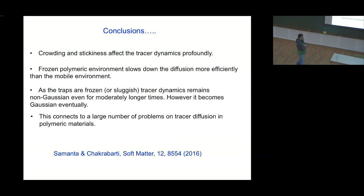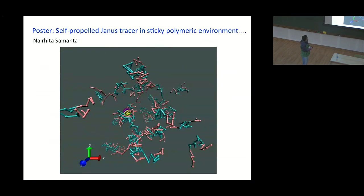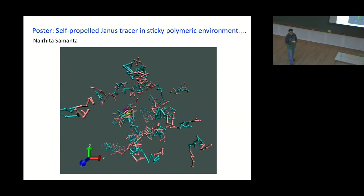This connects to a very large number of problems on tracer diffusion in polymeric materials. If you want to know more you can read our paper. This work was done with my student Navdeep. I thank SERB, CSIR, and IIT Bombay for funding. My student is also putting up a poster on self-propelled Janus tracer in sticky polymeric environment — please come and visit.